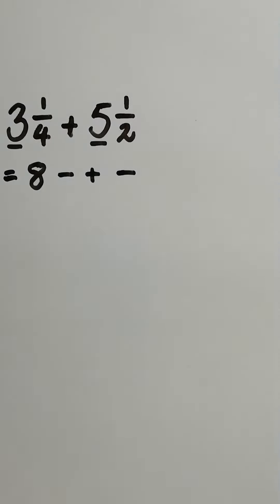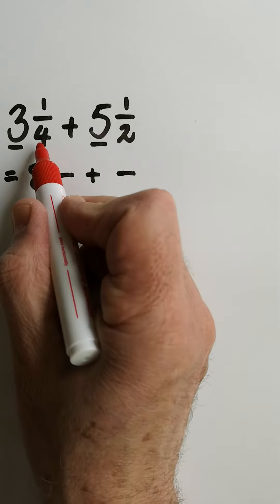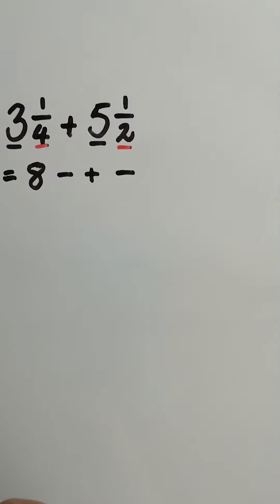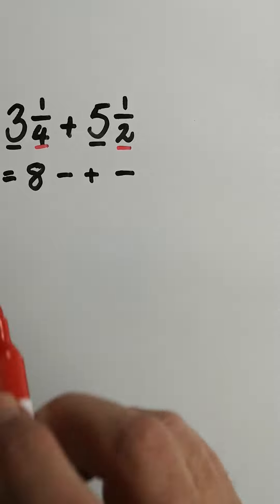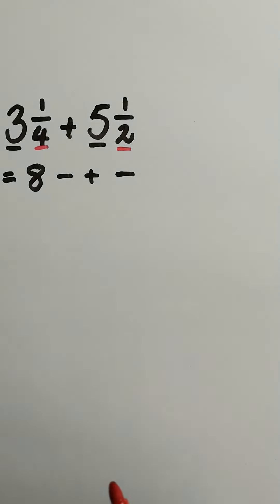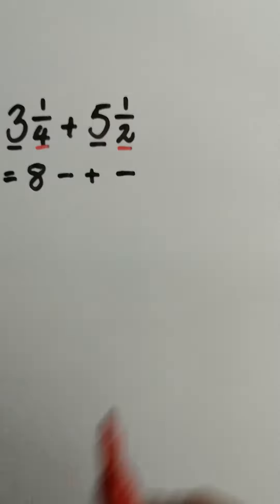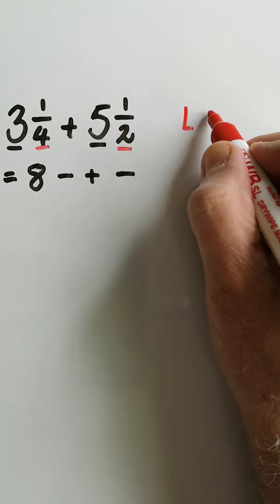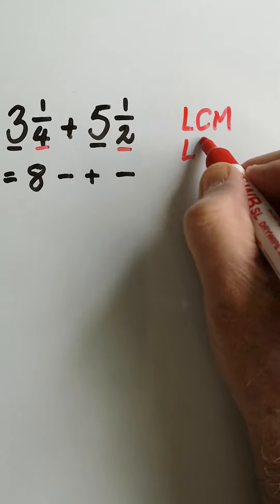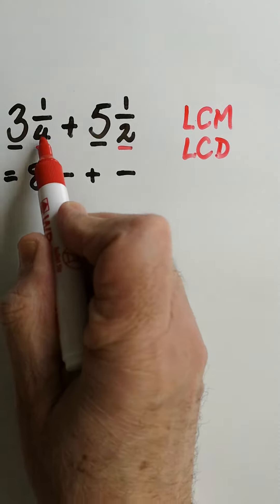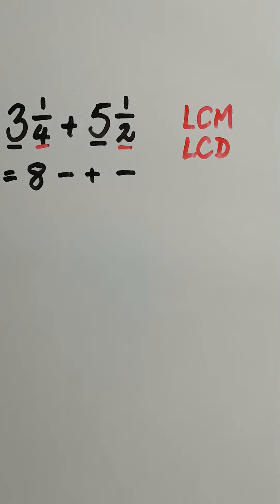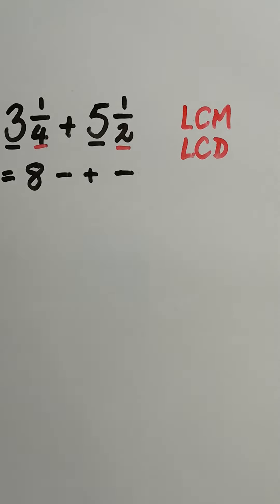Now the next step is we're going to look at the denominators. These are the denominators, the four and the two. What we're looking for is to make these denominators the same in value. So we're going to ask ourselves what is the lowest number, the lowest common multiple or the lowest common denominator. The lowest one that four and two can divide into, and in this case it's going to be four.